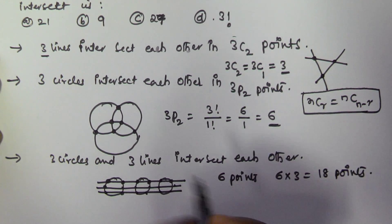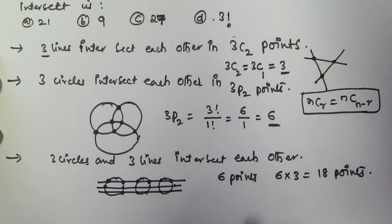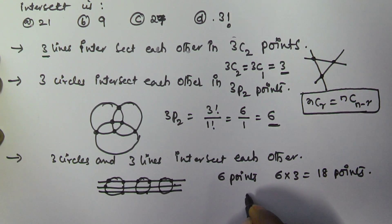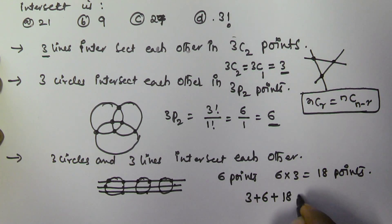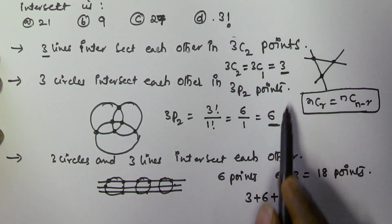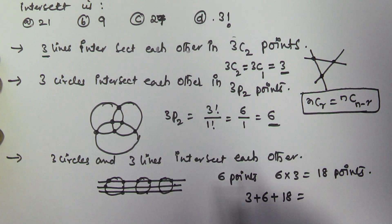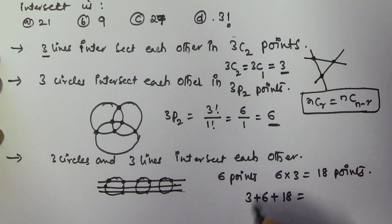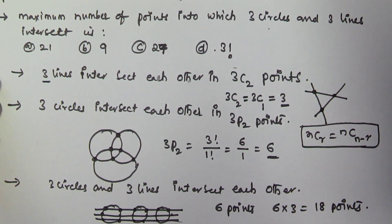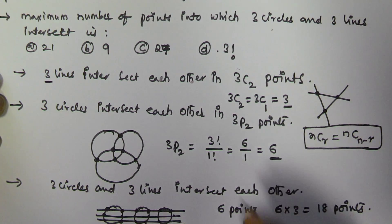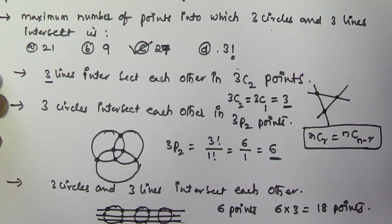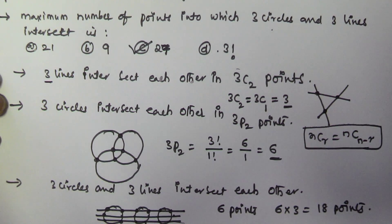Therefore, the maximum number of points into which three circles and three lines intersect each other is given by: 3 lines intersect each other in 3 points, 3 circles intersect each other in 6 points, and 3 lines intersect 3 circles in 18 points. So the maximum number of points is 3 plus 6 plus 18, which equals 27 points. So option C is the right answer. I hope you got this one — thank you very much for watching this video, and please subscribe.